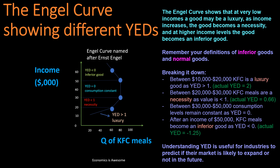You must remember your definitions of inferior goods and normal goods. Between incomes of $10,000 and $20,000, KFC is a luxury good as the income elasticity of demand is greater than one — the actual value works out to 2, so you can practice your equations. Between $20,000 and $30,000, KFC meals become a necessity as their YED value is greater than zero but less than one — the actual YED is 0.66.